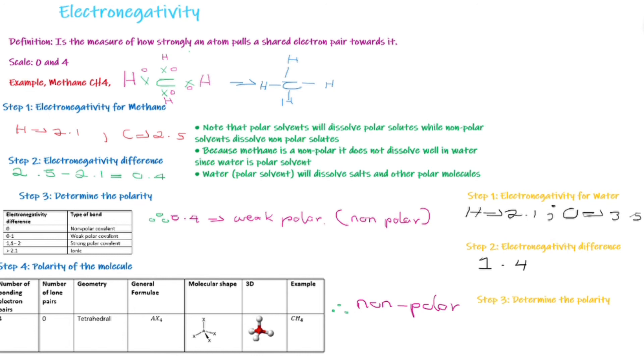And hence, therefore, we can say that the type of bond here is polar. The structure or geometry of water is bent. And we can say that the molecule polarity is also therefore polar.